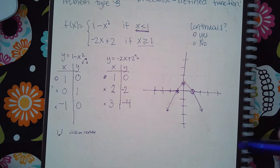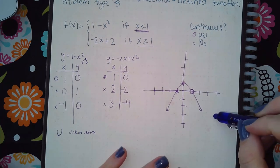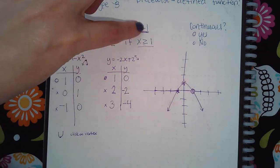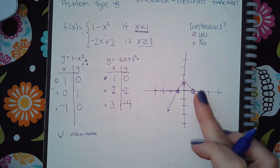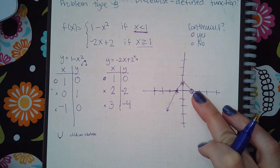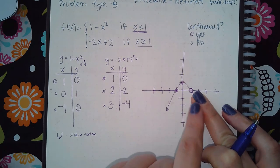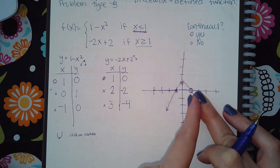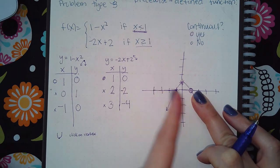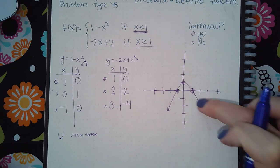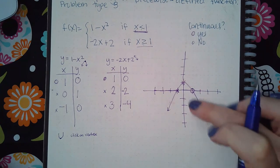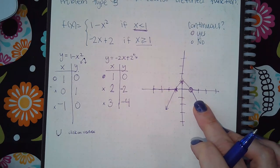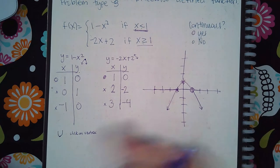Once the parabola is drawn, remember the x values are only less than 1, so the part of the graph to the right of x = 1 must be removed. I need to delete that right piece, but if I just click the erase button on the parabola, the whole parabola will disappear.